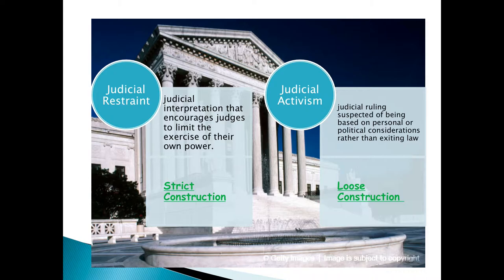We'll look at two different roles of the court: judicial restraint and judicial activism. The court can act in two different ways. They can show restraint — this is when they give an interpretation that encourages the judge to limit the exercise of his own power. This is when a judge or the courts act in what we call strict constructionism: they go by exactly what they believe the Constitution allows them to do and do not go beyond that.